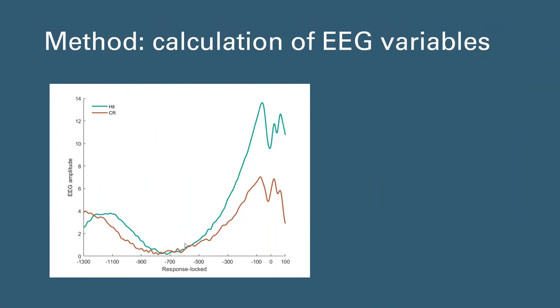To transform the EEG components into values that can be included into trial by trial model fitting, EEG variables are computed. In a separate study, we also found that these EEG components, especially LPC, demonstrate the biggest difference at the time of the response. The current study has tried several methods to extract these variables. The current method uses a response-locked epoch, as shown on the screen.